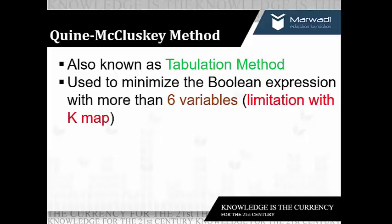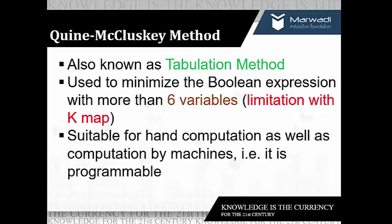We can easily simplify boolean expressions up to six variables using KMAP, but what about boolean expressions comprising more than six variables? The simplification of such expressions becomes complicated using KMAP, and at that point the tabulation method is handy to use. This method is suitable for hand computation as well as computation by machines — that is, it is easily programmable.